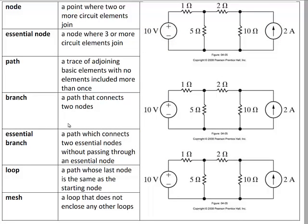Now let's look at some other terms used to describe a circuit. The first vocabulary word is node. We've actually discussed node before when we were talking about series and parallel. Recall that a node is the meeting point where two or more circuit elements join together. Looking at the figure to the right, the first node is at the bottom where the 10 volt, 5 ohm, 10 ohm, and 2 amp come together.